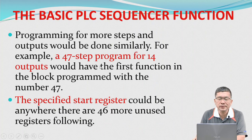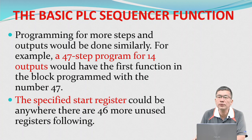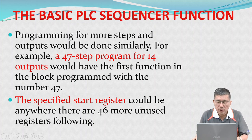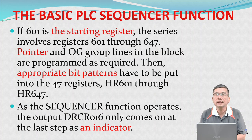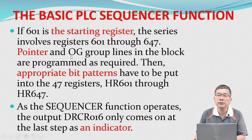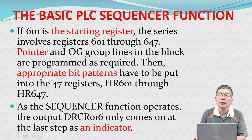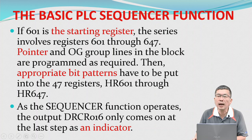Programming for more steps and outputs would be done similarly. For example, a 47-step program for 14 outputs would have the first function in the block programmed with the number 47, the specified start register. The specified start register could be anywhere there are 46 more unused registers following — 601 is the starting register. The series involves registers 601 through 647. The pointer and the output group lines in the block are programmed as required.